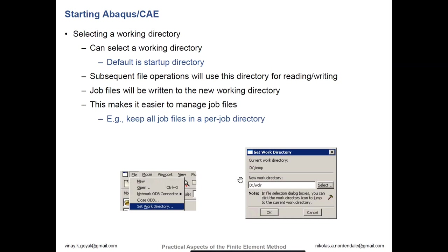An important thing to note is that the default for Abaqus when creating jobs is usually just to title them job-1, job-2. When you start using Abaqus or FEA significantly, you're going to generate a lot of files. So it's important to name your files something descriptive — usually with a date or something very clear — so you understand what the file names are without having to open each one up individually.